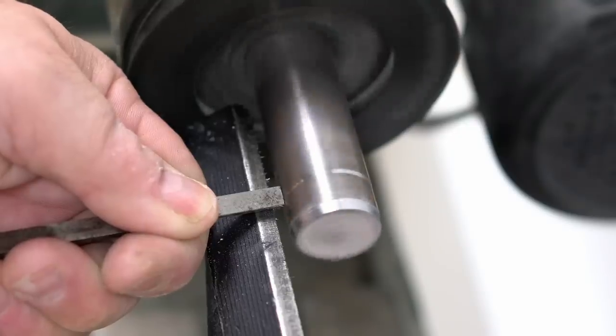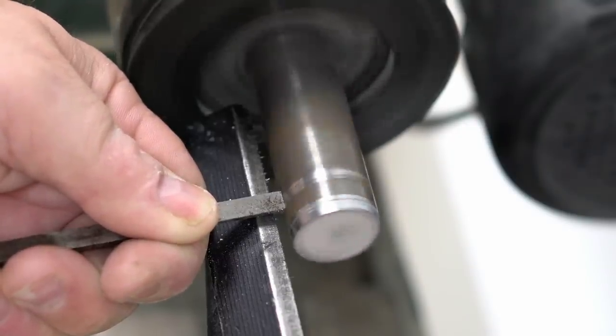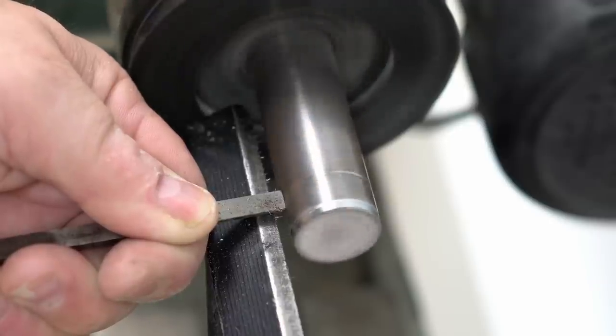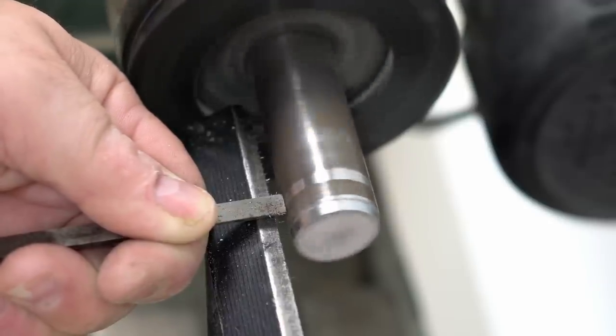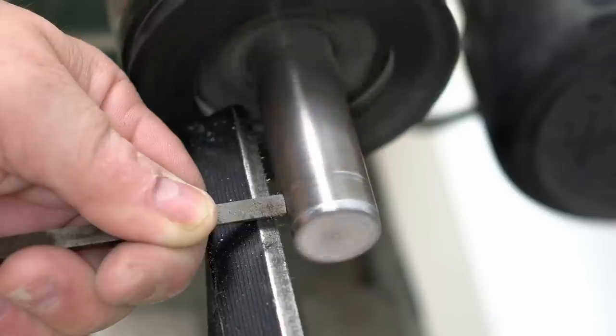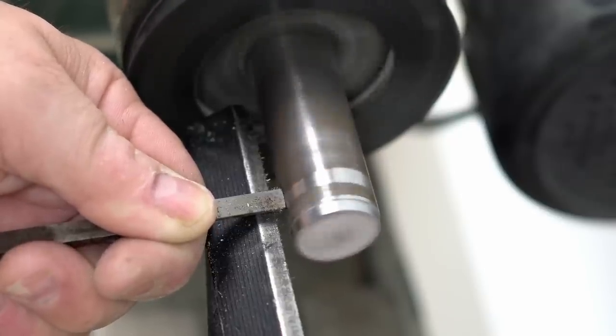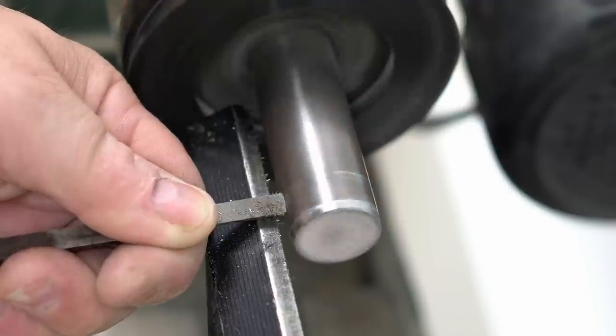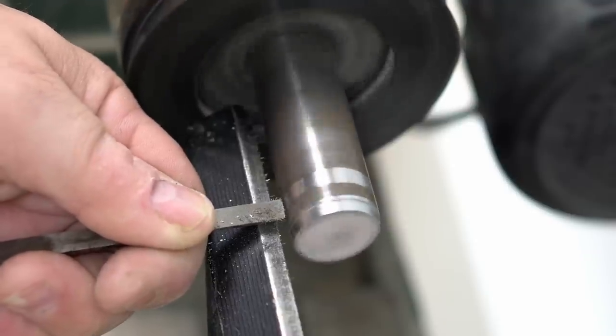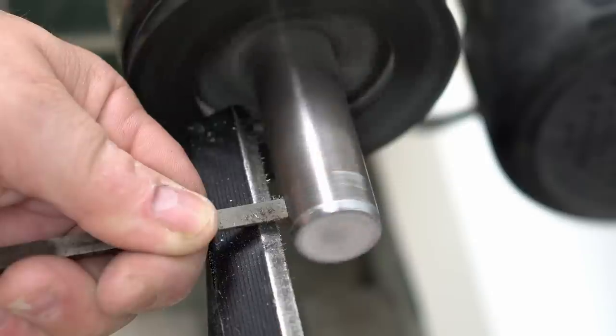Now a real metal lathe would have a tool post that's very solid and it sits down on ways that are very solid, and no part of my lathe is anything like that. So I was getting a lot of chatter and it wasn't cutting that well, and then the chisel was getting too dull too quickly to really be a viable option.